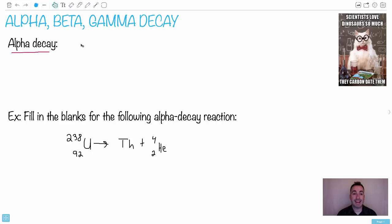For alpha, beta, and gamma decay, it's important to just know what each of them means. Speaking of means or memes, I've got this nice little cat here. I love a science cat. Scientists love dinosaurs so much they carbon date them. Notice someone actually bothered to Photoshop and put a little dinosaur there, which I thought was actually so cute.